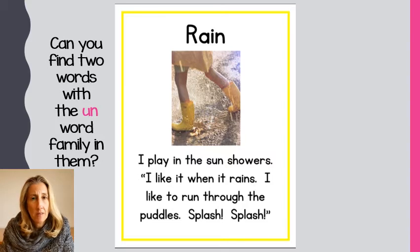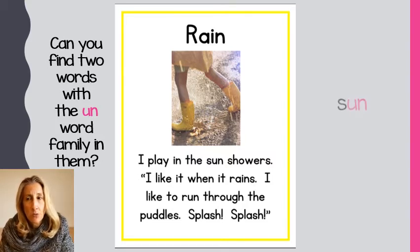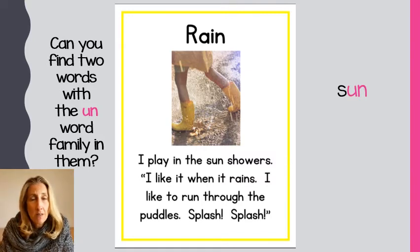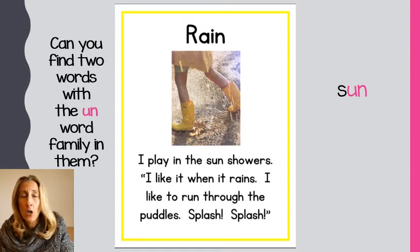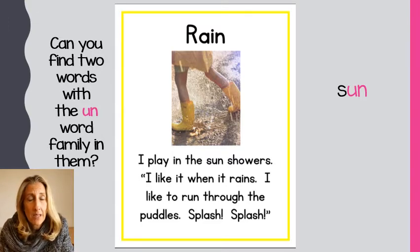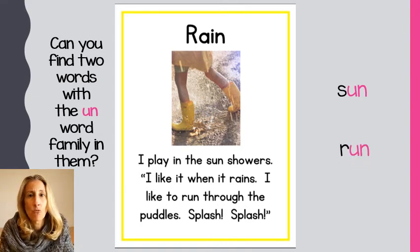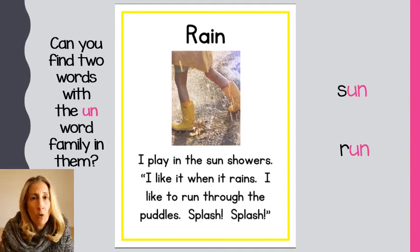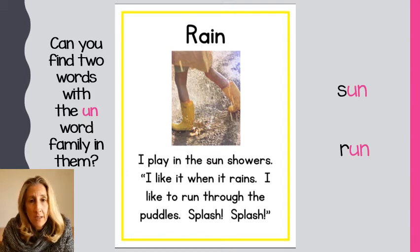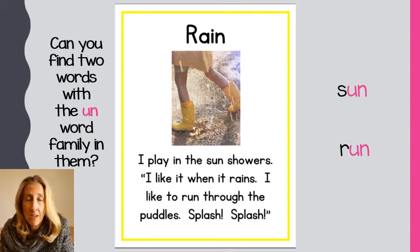Let's take a look back at the text. There's one! When we read 'I play in the sun showers,' the word 'sun' has the 'un' word family in it. Now let's see if we can find another one. Did you find it? It's the word 'run' — 'I like to run through the puddles.' So there are two words that use the word family 'un' to help me figure out in this text.